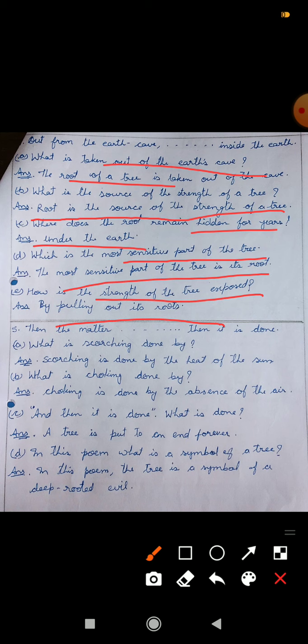Number five. Then the matter of scorching and choking in sun and air, browning, hardening, twisting, withering and then it is done. So number one. What is scorching done by? Scorching kaise ki jati hai? Unko sukha deena, unko khatam kar deena. Scorching is done by the heat of the sun. Us dhup se wo sukh jata hai. What is choking done by? Choking kaise hoota hai? Jiasse kisi ki saans rok deena. Choking is done by the absence of the air. And then it is done. Yahaan par koon se done ki baat hori hai? What is done? Kya ho gaya? A tree is put to an end forever. Peed ko humeisha ke liye khatam kar diya gaya.